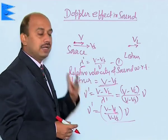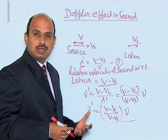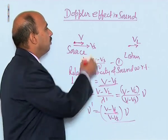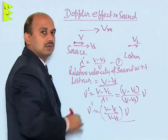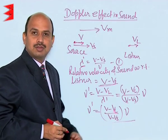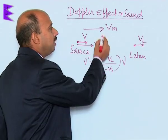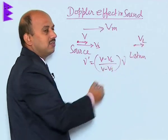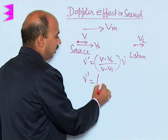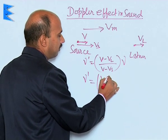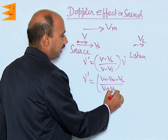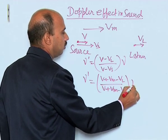I have assumed the medium is at rest with no motion of the medium. Now suppose the medium is also moving with velocity vm towards the listener. Then the formula for the apparent frequency becomes ν' = (v + vm − vl) / (v + vm − vs) × ν.